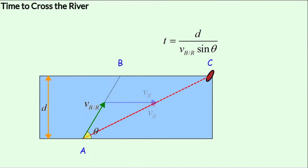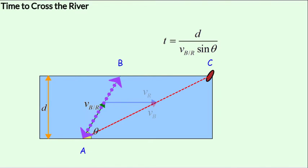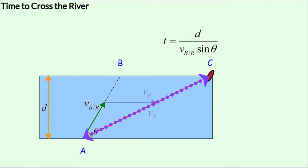To obtain the time, we could use distance d with the y-component of velocity vb_r·sinθ; or we could use distance AB (d/sinθ) with velocity vb_r; or we could use distance AC with velocity vb. The key principle is: we must use the velocity in the direction of the distance we consider.